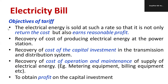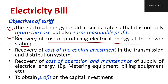The major objectives of the tariff are as follows. Number one: to return the cost and to earn a reasonable profit, otherwise no company can survive. This includes recovering the cost of producing electrical energy at the power station — hydro power station, thermal power station — 100% of the cost of electricity production is involved. Next is the recovery of cost of capital investment. The supplying company is investing a huge amount for electricity production and transmission, and they have to recover those costs, otherwise they will go bankrupt.